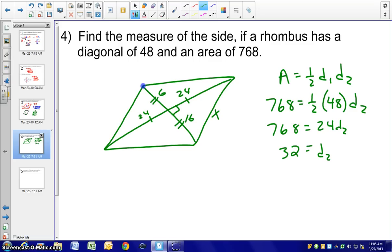So using our Pythagorean theorem, 24 squared plus 16 squared equals X squared. 832 equals X squared. Square root both sides and simplify that. X would be equal to 8 square root 13 for our side measure.